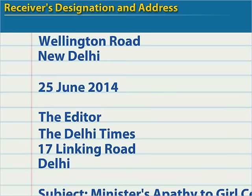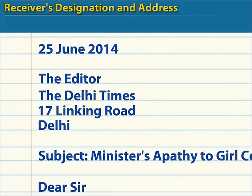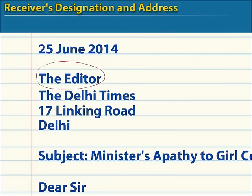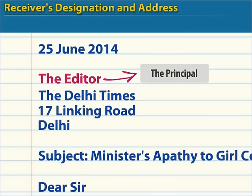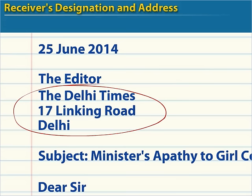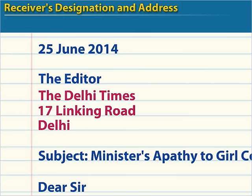For the receiver's designation and address, leave a line after the date and left-align it as in a block pattern. Start with the receiver's name and official designation — write the name first, followed by the designation. If you do not know the name of the receiver, write only the designation, for example, 'The Principal' or 'The Manager.' Write the official address right below the designation without leaving a line. Do not use any punctuation mark in the address.